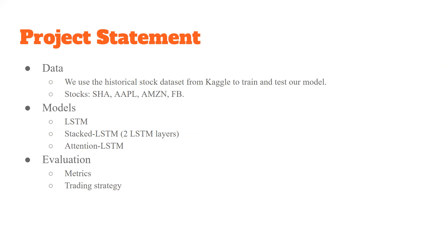I will generally introduce our project from dataset, models, and evaluation. We use the historical stock dataset from Kaggle to train and test our model. There are Shanghai Securities Composite Index, Apple Index, Amazon Index, and Facebook Index. For the models, we plan to compare three different LSTM model architectures, including LSTM, stacked LSTM, and attention LSTM. Finally, we used mean square error, mean absolute percentage error, mean bias error, and rise and fall accuracy as our metrics.